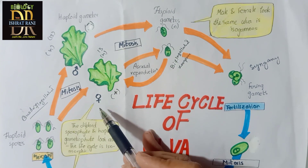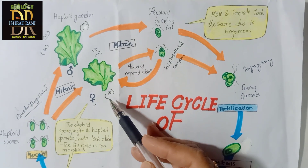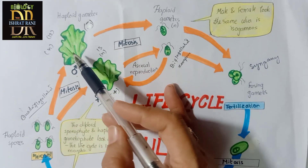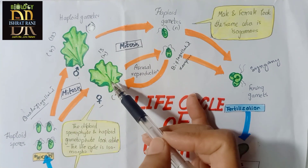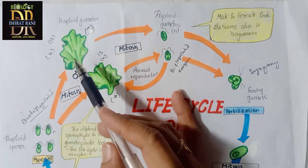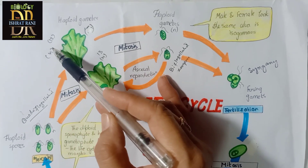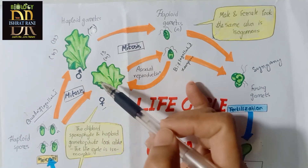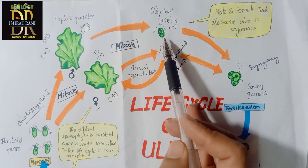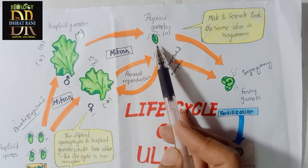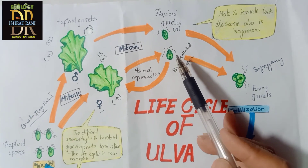These haploid spores mature and turn into male gametophyte and female gametophyte, indicated by positive and negative symbols. Both male and female gametophytes are morphologically similar and have the haploid number of 13 chromosomes each. After that, they produce haploid gametes, which are biflagellated — also known as biflagellated zoospores.